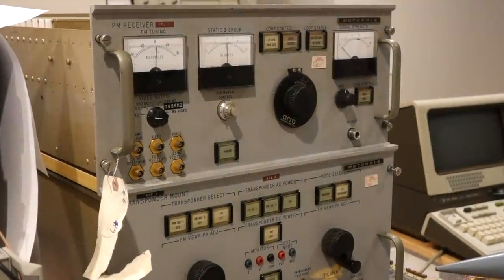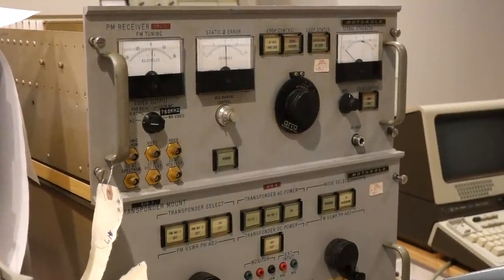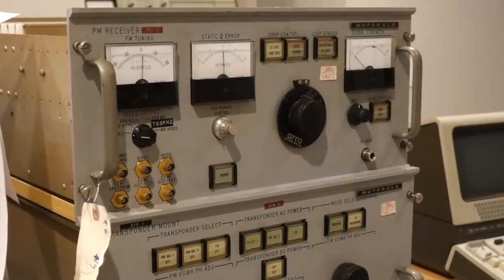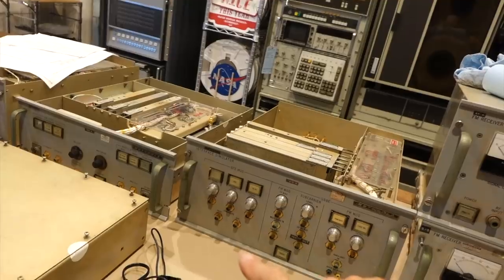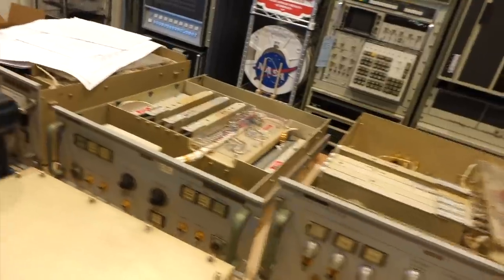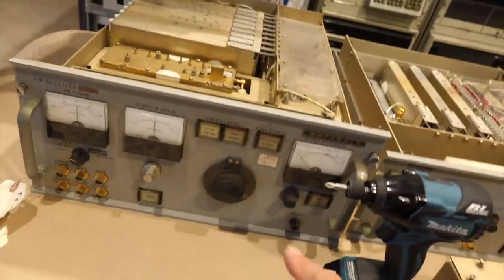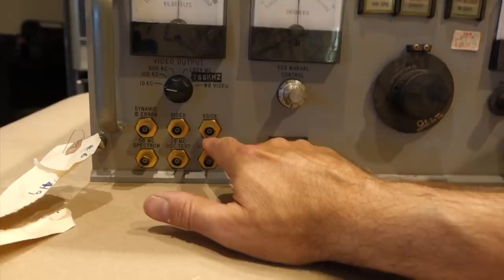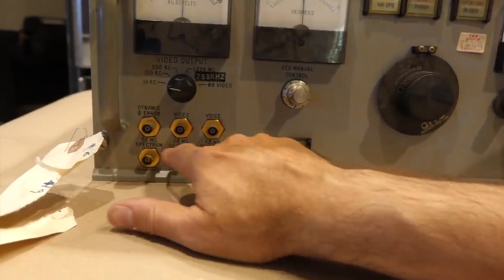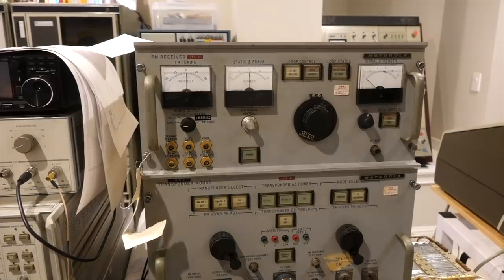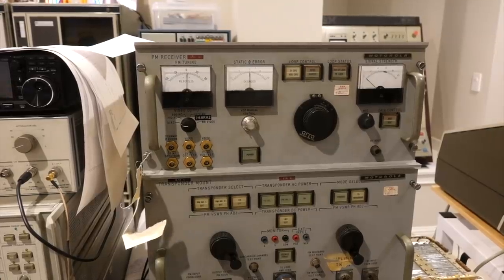And actually, we think we have one. We believe this test box here is one of the original PM test receivers used by NASA at the Cape. But there is a catch, we have zero documentation about it. Zippo, zilch, nada, nothing. All we have are the markings on the front panel. So we are essentially flying blind with this one. But you know us, that won't prevent us from trying to revive it in this episode.